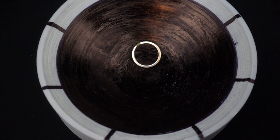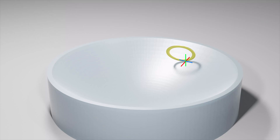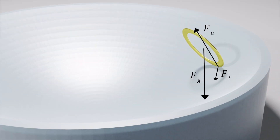We can also look at the motion from a Newtonian perspective. In terms of forces, the ring feels a gravitational force, a normal force from the bowl, and a friction force. The direction of the friction force will depend on the direction of motion of the contact point. In terms of torque, the gravitational force provides no torque since it acts on the center of mass of the ring. The normal and friction force both provide a torque.